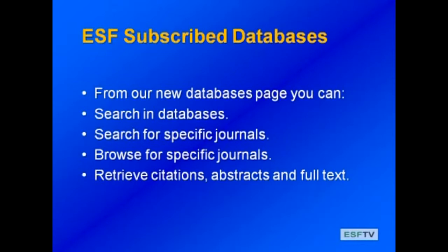Here are some of the features from our new interface. From our new databases page, you can search in a particular database, search for specific journals, browse for specific journals, and you can retrieve citations, abstracts, and the full text. Let's go ahead and take a look at what this interface looks like live — we're going to go to the Moon Library homepage and into our new e-journal database interface.